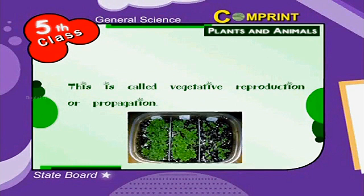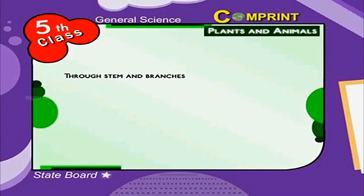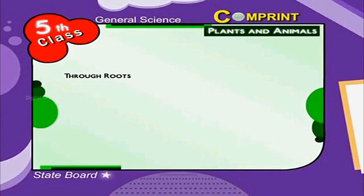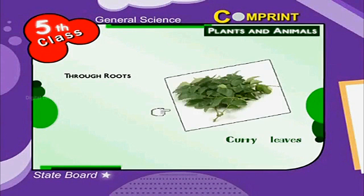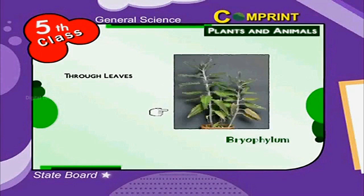Some plants are developed through roots, branches, stem, etc. This is called vegetative reproduction or propagation. For example, through stem and branches: the rose. Through roots: curry leaves. Through leaves: bryophyllum.